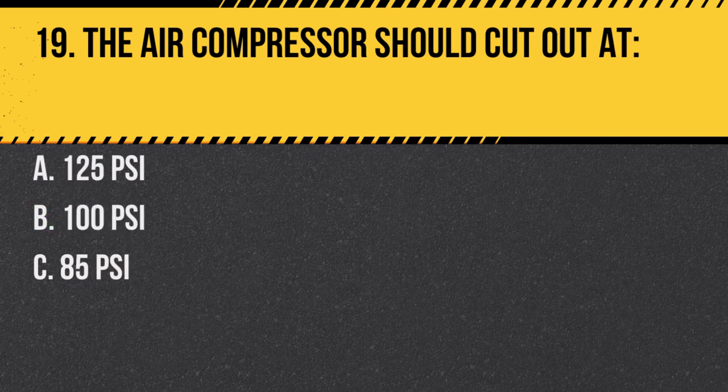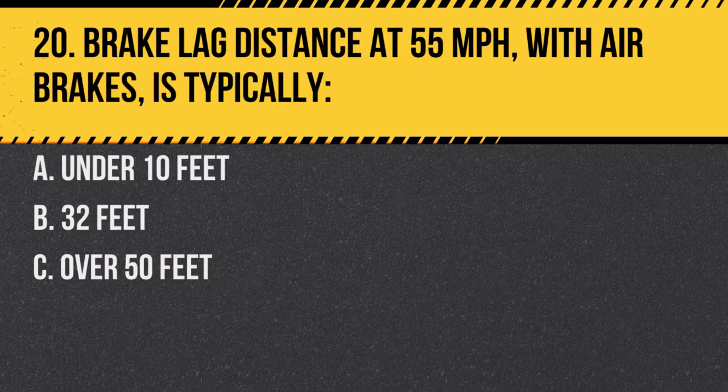Question 19. The air compressor should cut out at: A. One hundred and twenty-five psi. B. One hundred psi. C. Eighty-five psi. Answer A. One hundred and twenty-five psi. This prevents over-pressurization of the system.